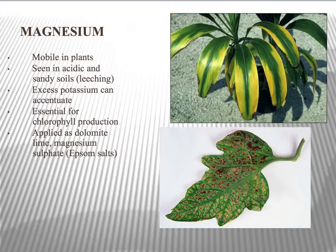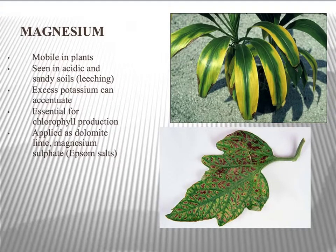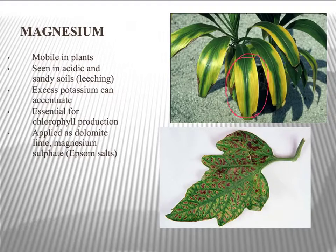Magnesium also shows intervenal chlorosis — yellowing of the areas between the veins of the plant. So intervenal chlorosis is not necessarily just limited to potassium; you also have to think of it when you've got magnesium deficiency. Magnesium deficiency, like many other macronutrients, tends to be seen most in the older leaves. We can see on the ornamental plant in the picture that the old leaves are going yellow, but the newer leaves are still green because the plant is taking magnesium out of the old leaves and sending it to the new ones. This means magnesium is also mobile within the plant.